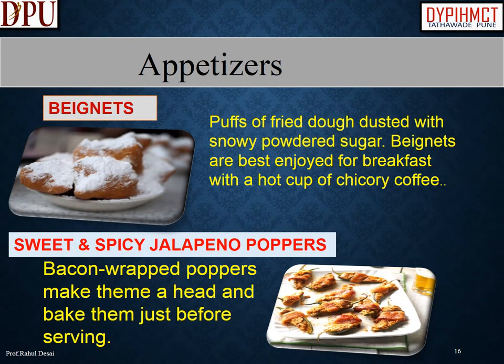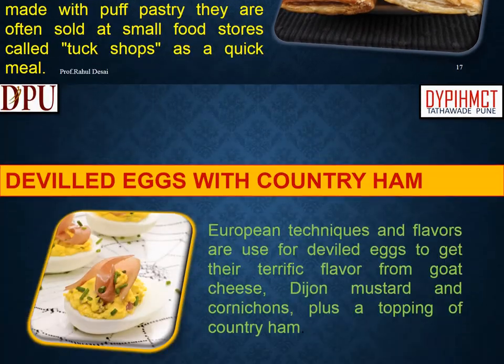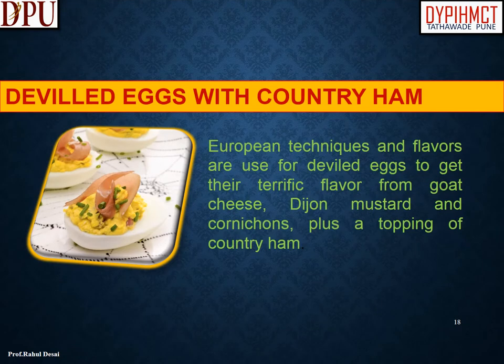Famous appetizers of North American cuisine: Beignets are puffs of fried dough dusted with powdered sugar, best enjoyed for breakfast with a hot cup of chicory coffee. Sweet and spicy jalapeño poppers are bacon-wrapped and baked just before serving. Bubble and Squeak is made from leftovers of a roast beef dinner and often served with bacon and eggs. Sausage rolls are eaten for breakfast, lunch, or as appetizers at parties — served hot or cold in puff pastry. Deviled eggs with country ham use goat cheese, Dijon mustard, cornichon, and a topping of country ham.